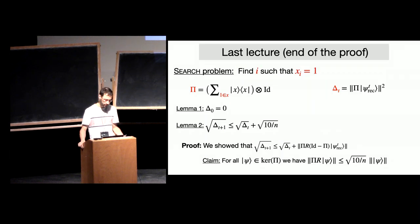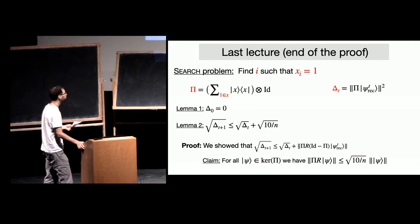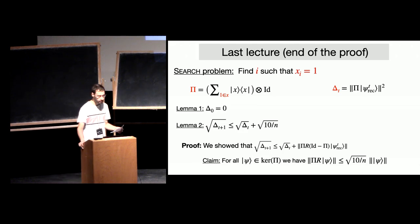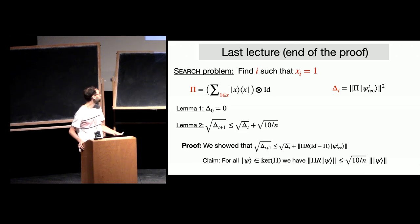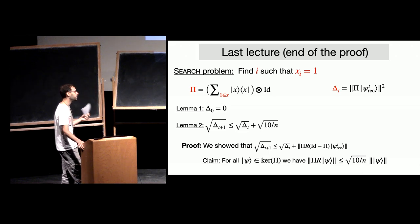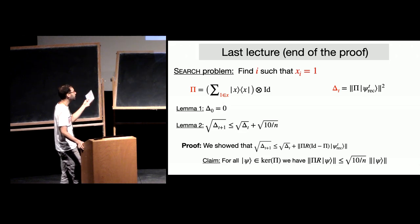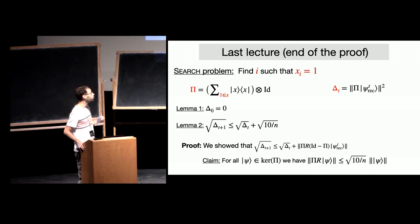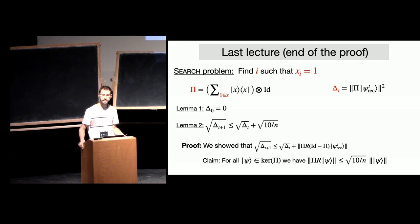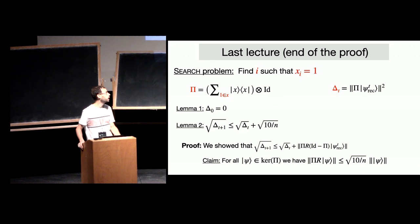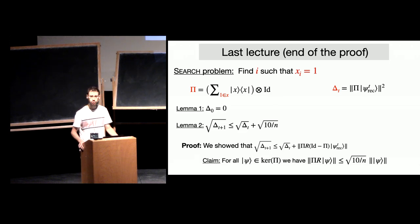Let me go back to the last slide of last lecture. The goal was to obtain a lower bound on the quantum query complexity of the search problem. For that, we defined this quantum recording framework. At the end, we had this projector pi, which projects onto a basis state that have recorded a 1. And we wanted to bound the progress measure delta t, which was the probability of observing a 1 if we measure this state in the quantum recording model.